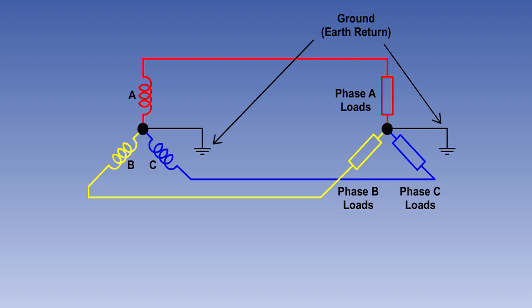The neutral point is normally grounded and uses the earth return in modern aircraft. It will carry any out-of-balance current between the phase loads.